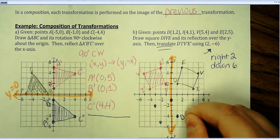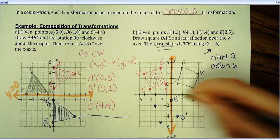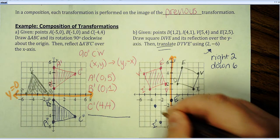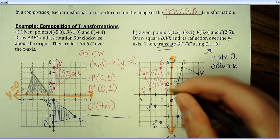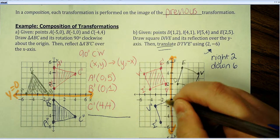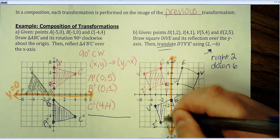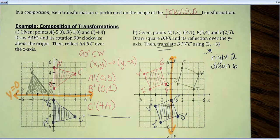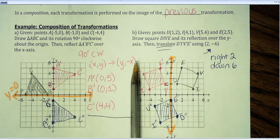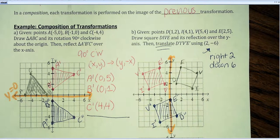So, here's D double prime. This is E double prime. I double prime. And, V double prime. And, we have now transformed the square twice. We did a reflection over the y-axis. And, then, we did a translation, scooching it two units to the right and six units down.